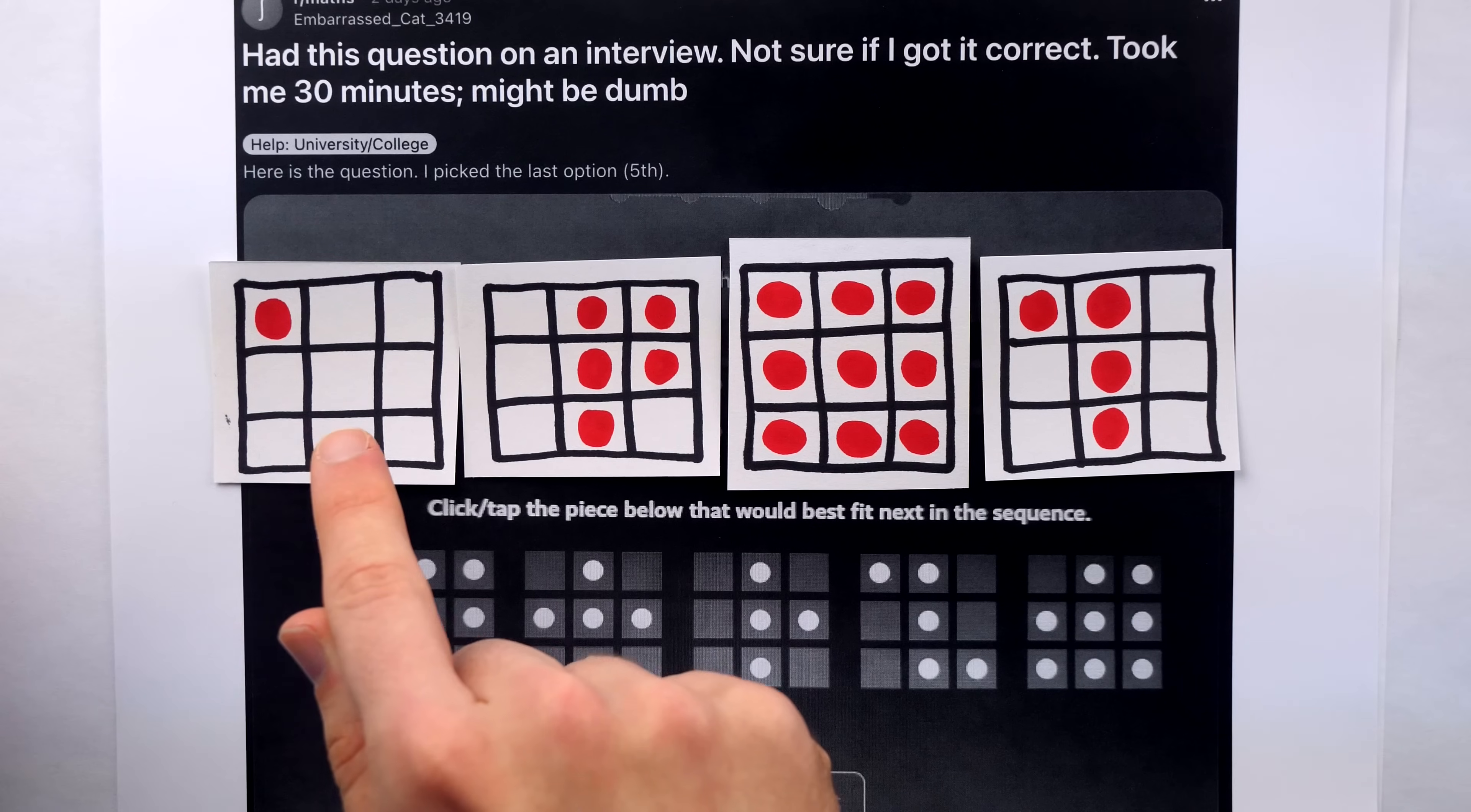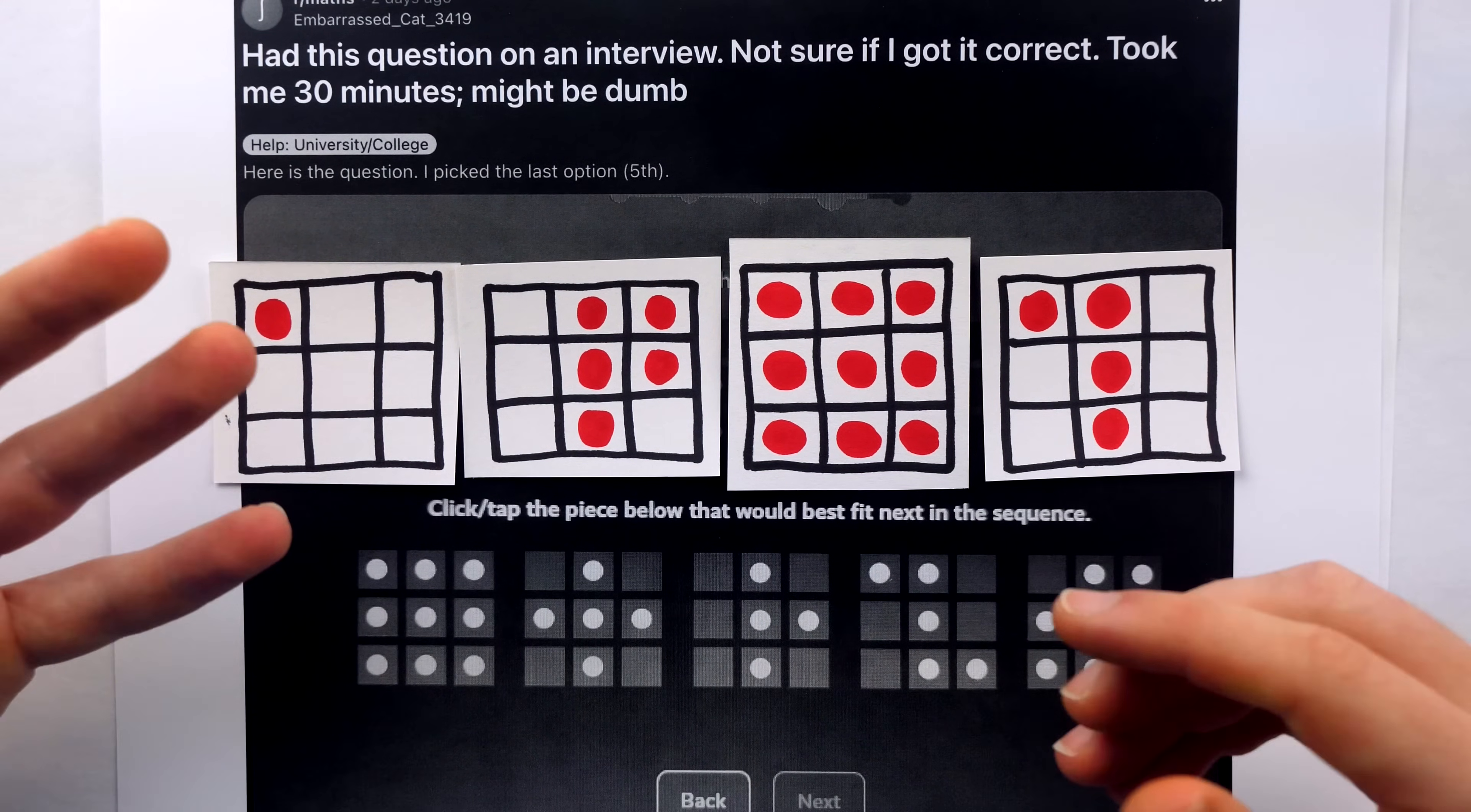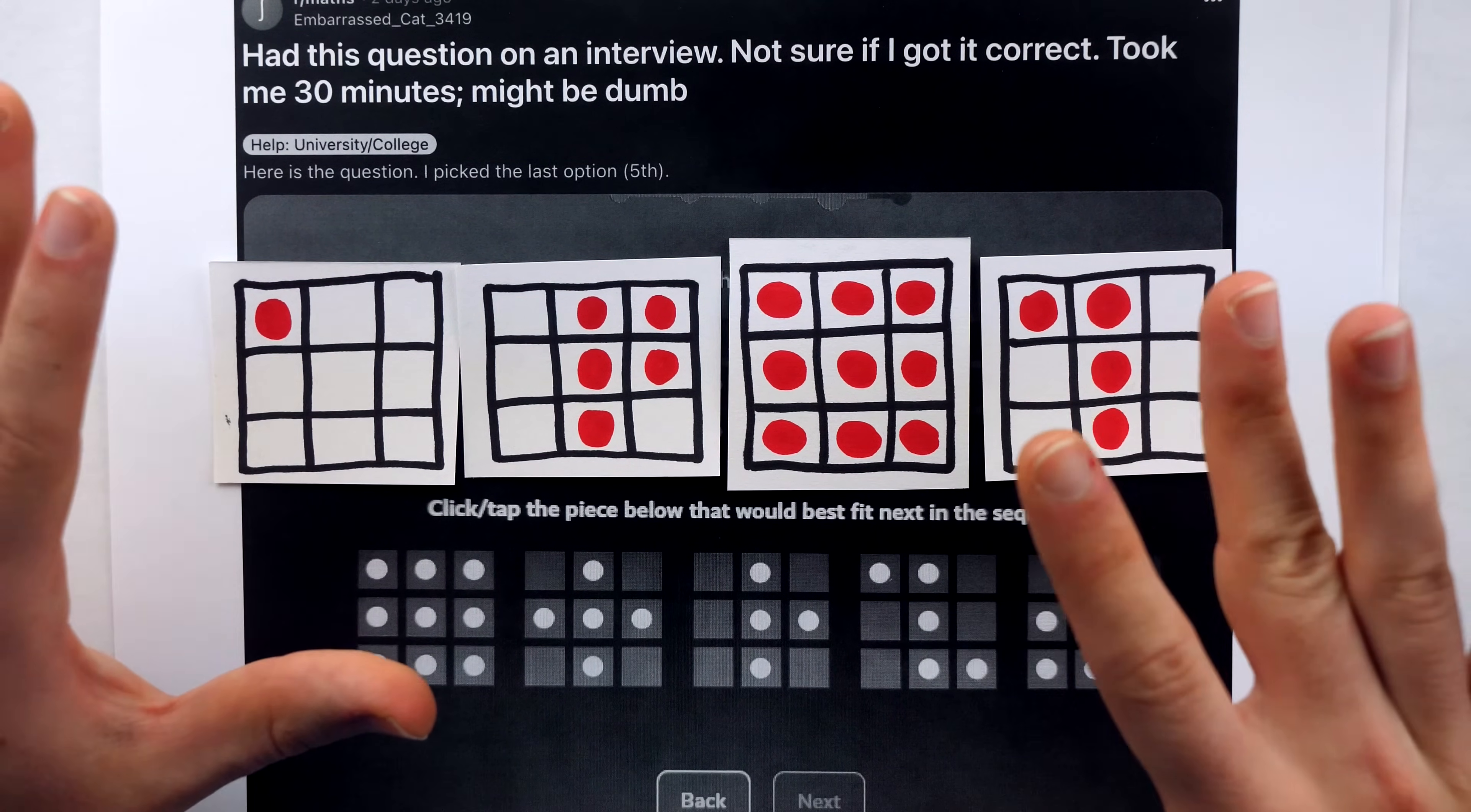There's no pattern explicitly spelled out in this sequence of grids, and that's not necessarily a problem. We use a sort of lazy notation in mathematics all the time, where things aren't explicitly stated.